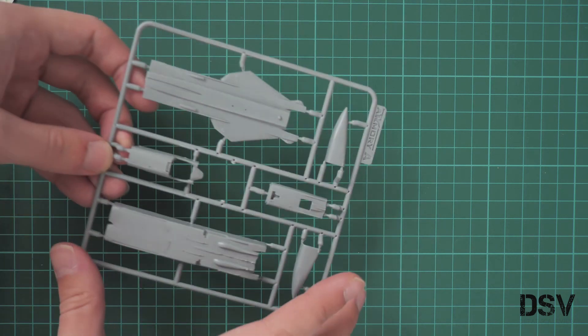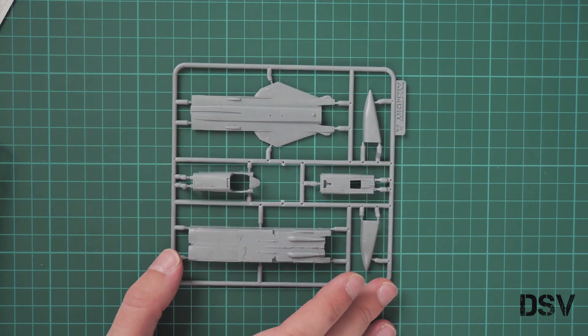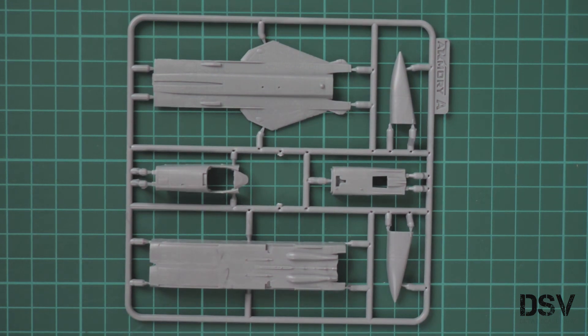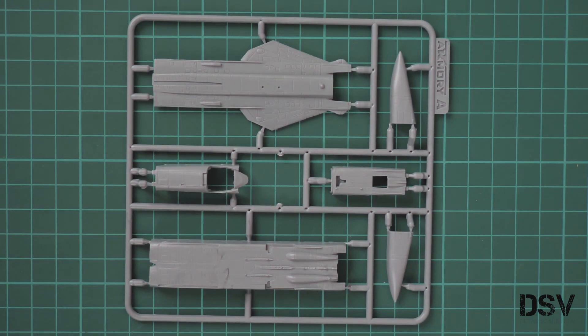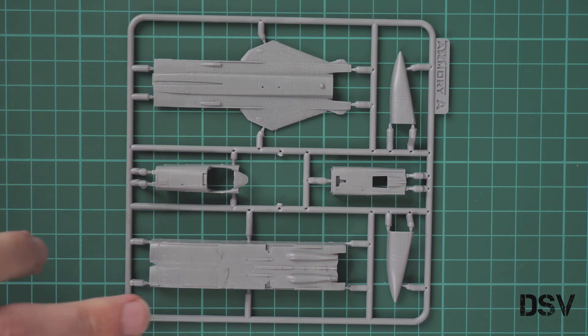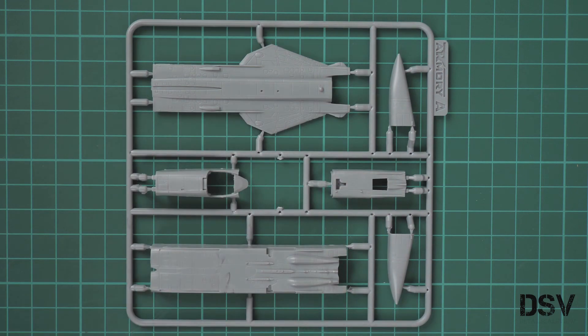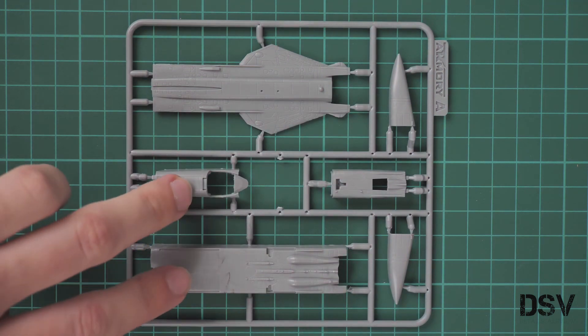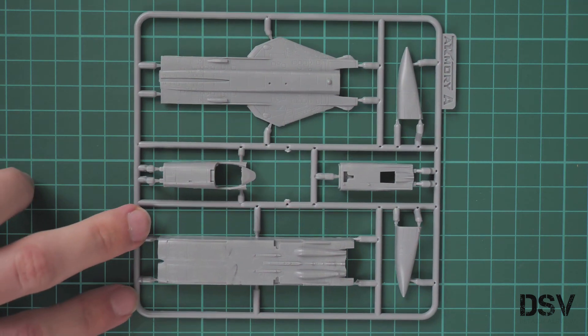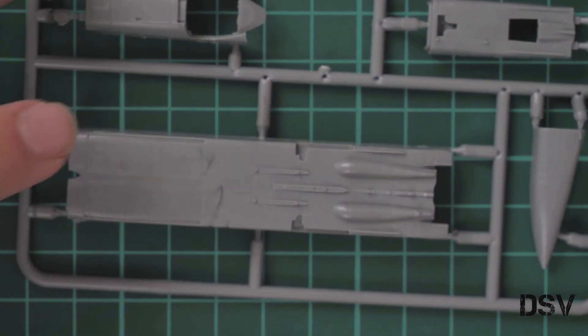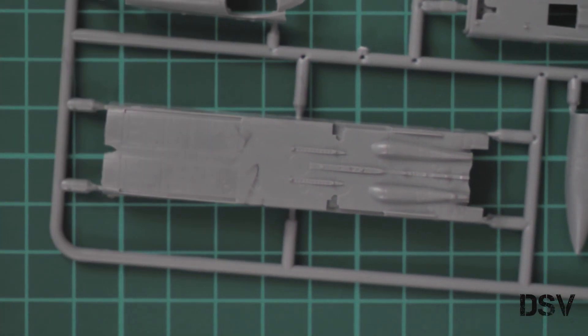The next plastic sprue is more interesting. Here we have fuselage panels. Obviously the fuselage is not divided into halves but into separate panels because of this boxy silhouette. We have recessed panel lines and a nose section glued out of two parts. The same can be said about this front area. Let's zoom in so you can see this with your own eyes.